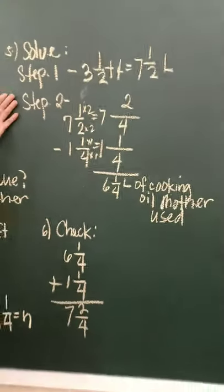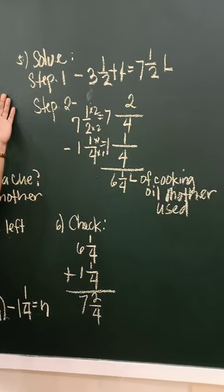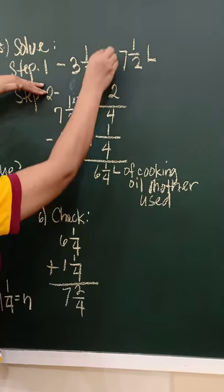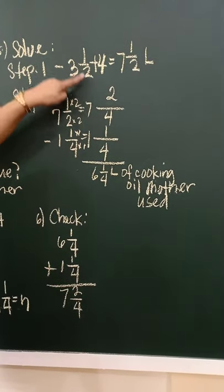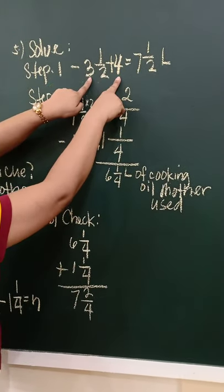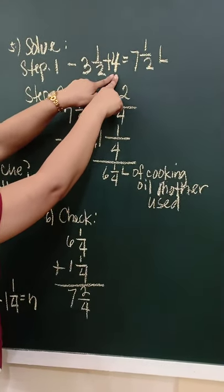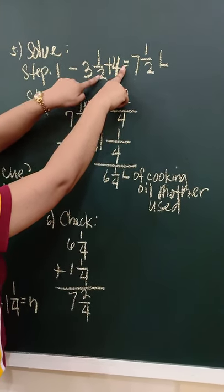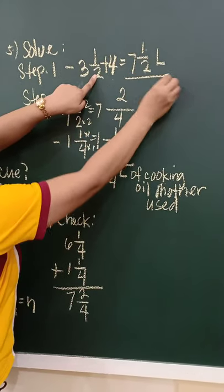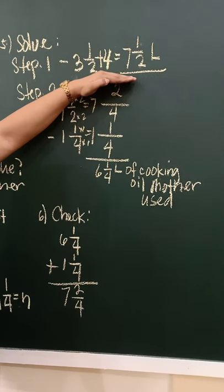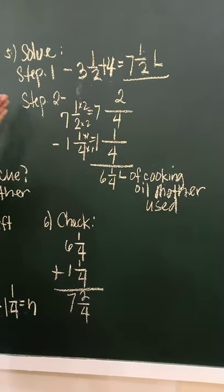The first step is addition. You add the three and one-half that mama had initially and the four liters she bought. So, you will add the whole numbers. Three plus four is seven. Since there's no fraction to add to one-half, so copy the one-half. So, the sum is seven and one-half liters. That's the total oil mama has.